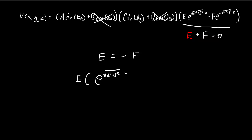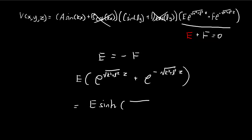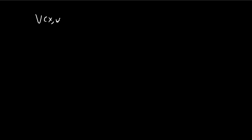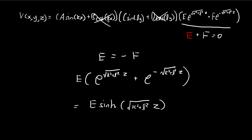With E equal to negative F, the z-dependent expression becomes proportional to e^(√(k²+l²)·z) minus e^(−√(k²+l²)·z), which resembles the hyperbolic sine function. Note there should be a factor of two in the definition of hyperbolic sine, but since E is an arbitrary constant we can absorb the two into it. So this z-term turns into a hyperbolic sine.